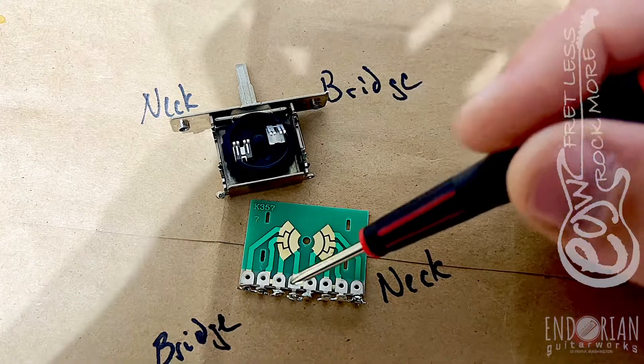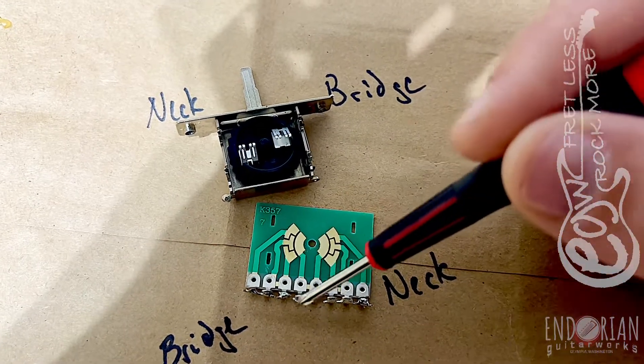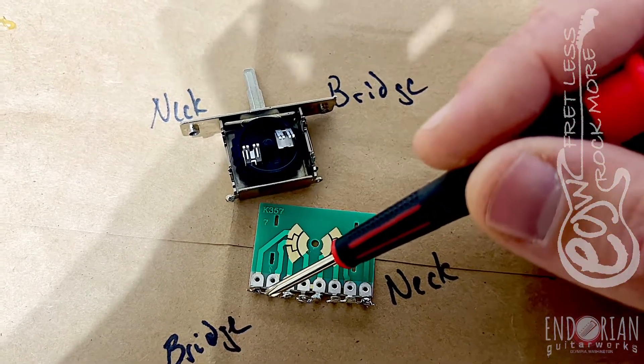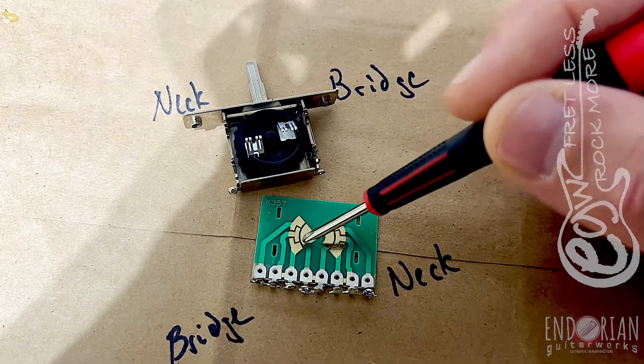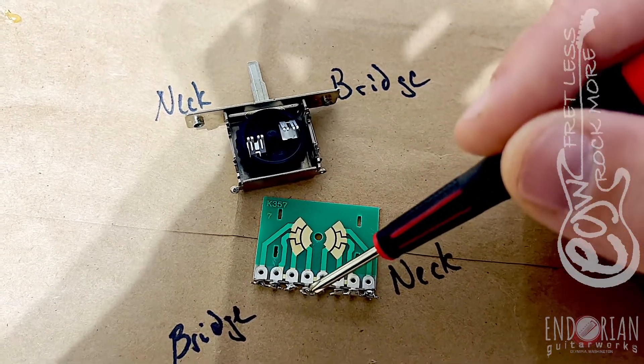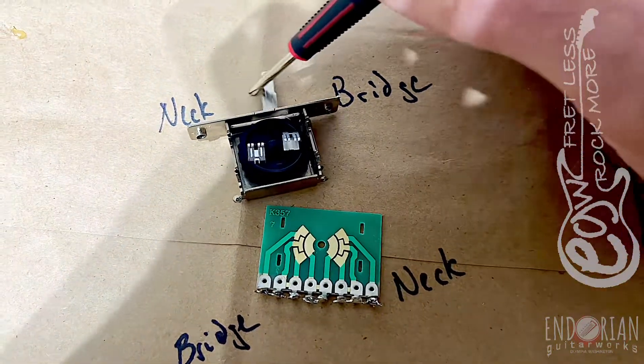You'll have a jumper from this lug to this lug so that it picks up that bridge pickup and sends it across over to here and is output along with the neck.